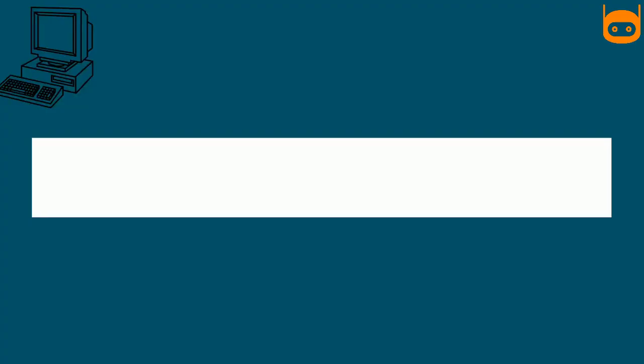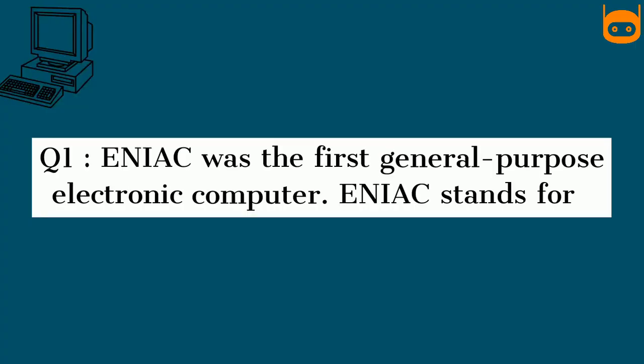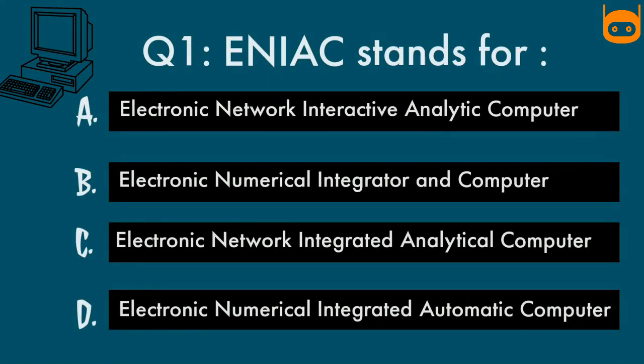Our first question is: ENIAC was the first general purpose electronic computer. So our question is, ENIAC stands for what? Options are: Option A, Electronic Network Interactive Analytic Computer. Option B, Electronic Numerical Integrator and Computer. Option C, Electronic Network Integrated Analytical Computer. Option D, Electronic Numerical Integrated Automatic Computer. Your time starts now.